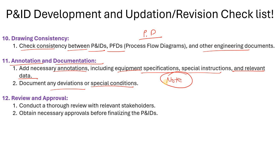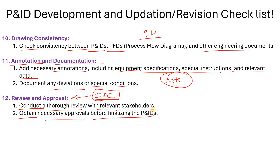Please follow a proper review system in your company, like the IDC process. The draftsman prepares the P&ID, then you check it as an engineer, then show it to your manager, senior manager, or HOD. Release it for internal review to all departments — piping, mechanical, instrumentation, electrical, and civil — so they can check it. Incorporate necessary comments and then proceed to release to the client. Conduct a thorough review with relevant stakeholders and obtain necessary approvals before finalizing the P&IDs.